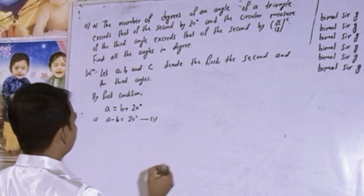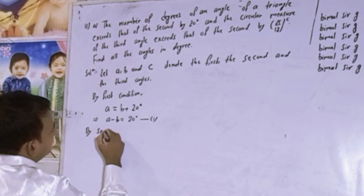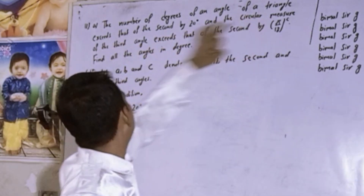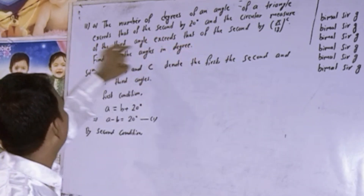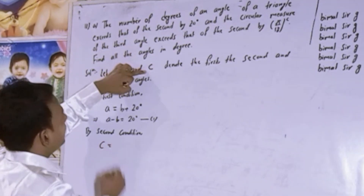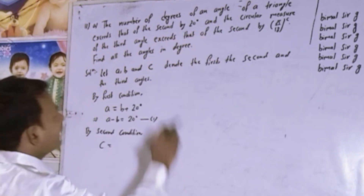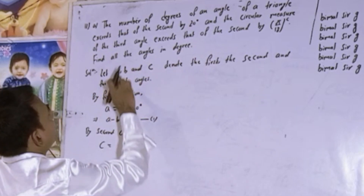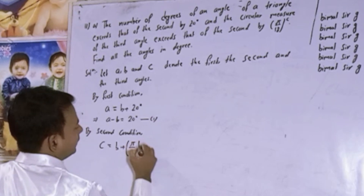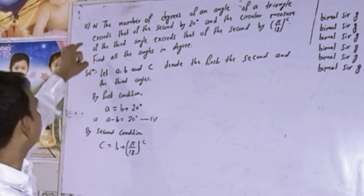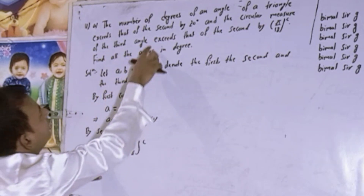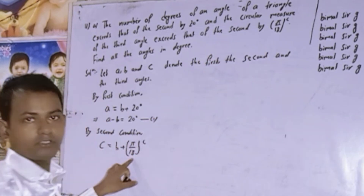Now by the second condition: the circular measure of the third angle exceeds that of the second by π/18 radian. So the third angle is C and the second is B. Therefore C exceeds B by π/18. So the second condition gives us: C minus B equals π/18 radian.